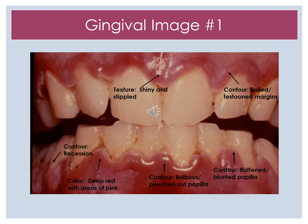In this gingival description image, we do have some recession on the mandible. The color is a deep red with areas of a lighter pink. The contour of the papilla is more bulbous and punched out, with some flattening towards the top of the papilla. On the maxillary, we can see that the texture is shiny and stippled, along with some rolled and festooned margins around those upper teeth.